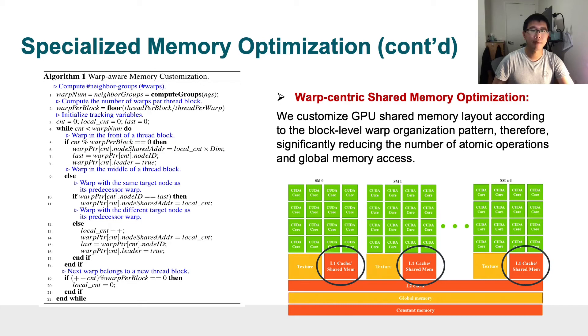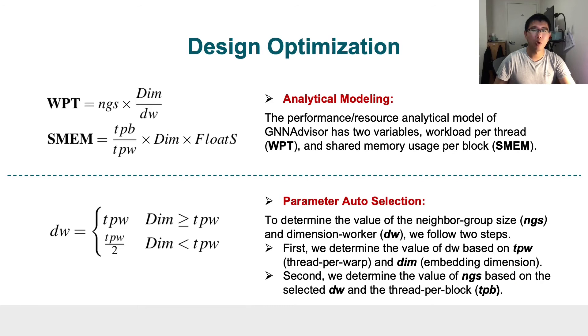To make our design more adaptable, we introduced our lightweight analytic model and a parameter auto-selection scheme. For analytic modeling, the performance and resource analytic model of GNAdvisor has two variables: the first one is the workload per thread, and the second one is the shared memory per block.